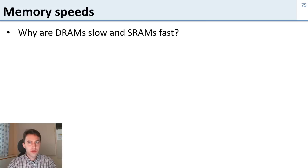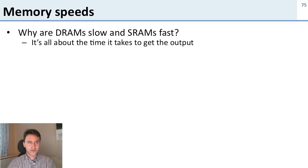Let's talk a little bit about memory speeds. Why are DRAMs slow and SRAMs fast? The reason for this is all about the time it takes to get the output. What does it mean to get the output? Well if there's a one or zero in the memory cell, it means how long does it take to get that one or zero out on the wire that comes out of the memory to the output.